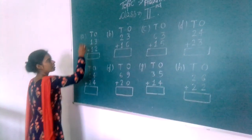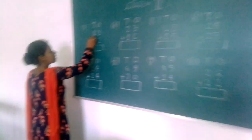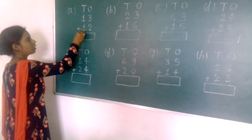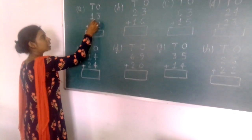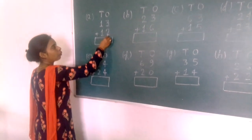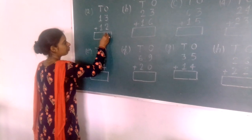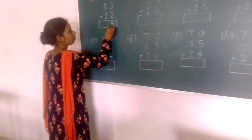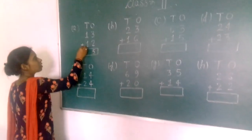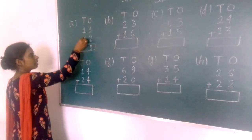First problem: one ten, three ones (13) plus one ten, two ones (12). Three plus two equals five. One ten plus one ten equals two tens.